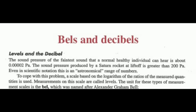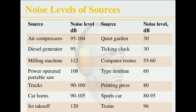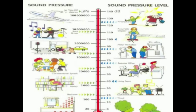The unit for the measurement scale is the bel, named after Alexander Graham Bell. The sound pressure of the faintest sound a normal healthy individual can hear is about 0.00002 pascals. The sound pressure produced by a Saturn rocket at liftoff is greater than 200 pascals — even in scientific notation, that is an astronomical range of numbers. This figure shows the noise levels of some sources, and another figure shows the sound pressure level and sound pressure of various items.